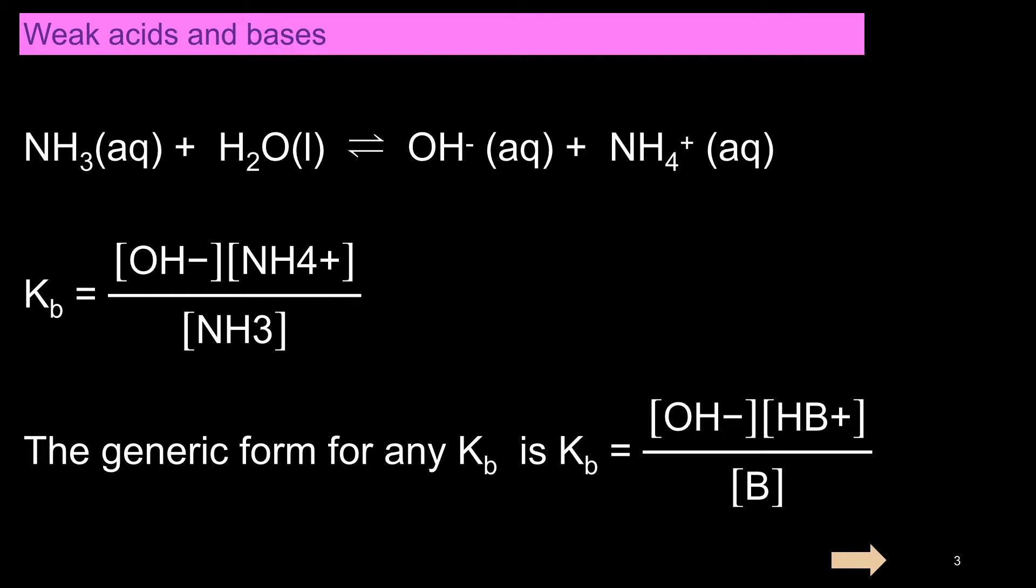The equilibrium constant for weak acids is called KA. The equilibrium constant for weak bases is called KB.